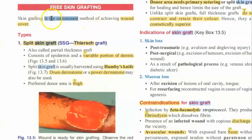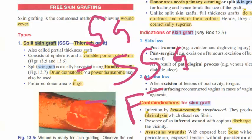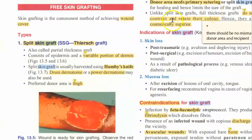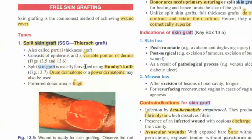Skin graft is a way of covering a wound. There are two types of skin grafting: split skin graft and full thickness graft. In a split skin graft, you take the epidermis and part of the dermis — it is a partial thickness graft. The donor site doesn't have to give too much, so it can heal easily, and you can take repeated grafts from that area.